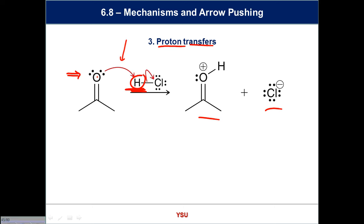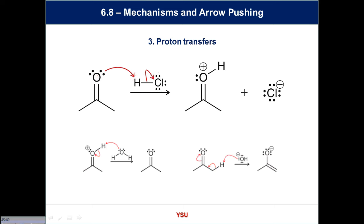I need two arrows for this proton transfer: one showing bond formation to the proton, and a second arrow because I'd be giving hydrogen too many electrons otherwise. Keep an eye on what you're attacking: if it has six electrons maybe you bring one arrow in; if it has eight and you bring something else in, you must lose something. If I had to give a term — Cl⁻ is taking off — what would you call it? A leaving group. This isn't so bad: a base comes in, takes up a hydrogen, and that is a proton transfer. That's the third type of arrow.